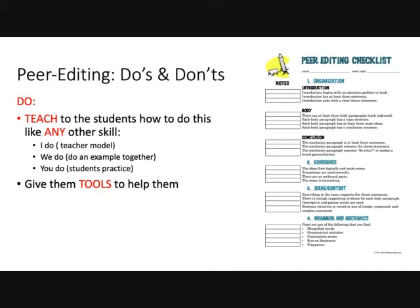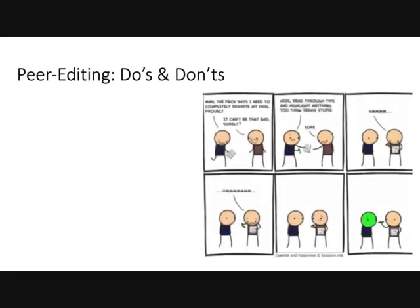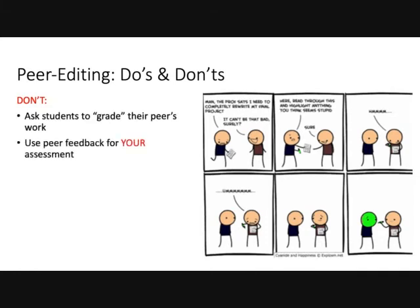Finally, you really need to give them tools to help them while they're peer editing. Things like checklists are super important — you don't have to use one as complicated as this example, but it gives you the idea. Of course, don't ask students to grade their peers' work for obvious reasons, and don't use peer assessment for your evaluation.